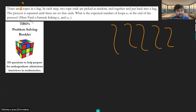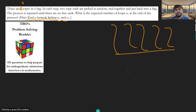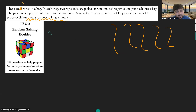We're given a clue: find a formula linking En and En minus one. Here, En is going to mean the expected number of loops if you start with n strands of spaghetti. What we're going to use is the law of conditional expectation.